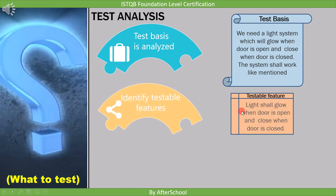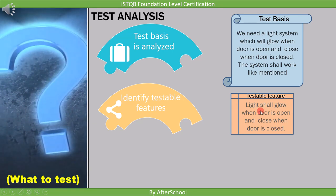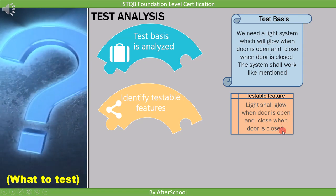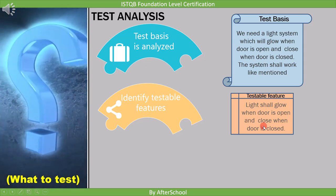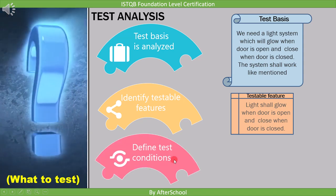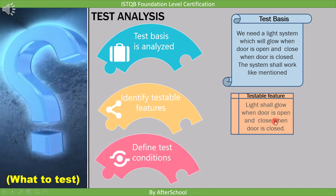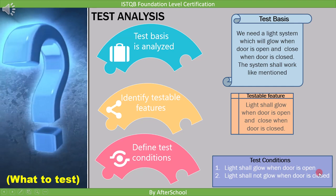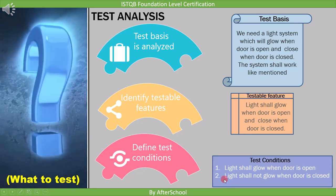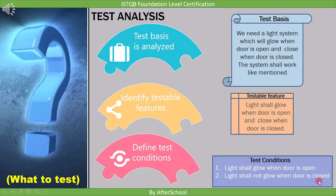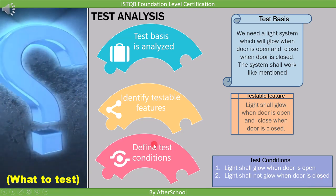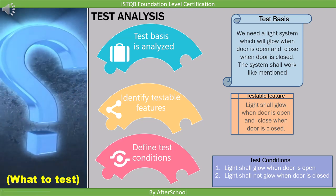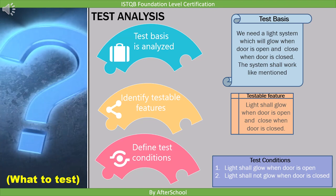From the requirement, we need to find the testable feature. The testable feature is: light shall glow when door is open and close when door is closed. We then derive test conditions: first, light shall glow when door is open; second, light shall not glow when door is closed. That's why we say during test analysis, the test basis is analyzed to identify testable features and define associated test conditions.